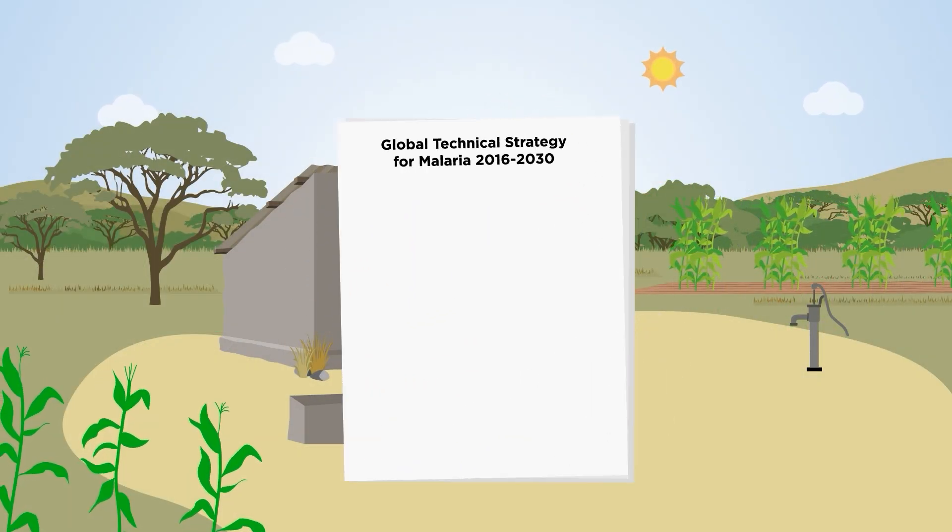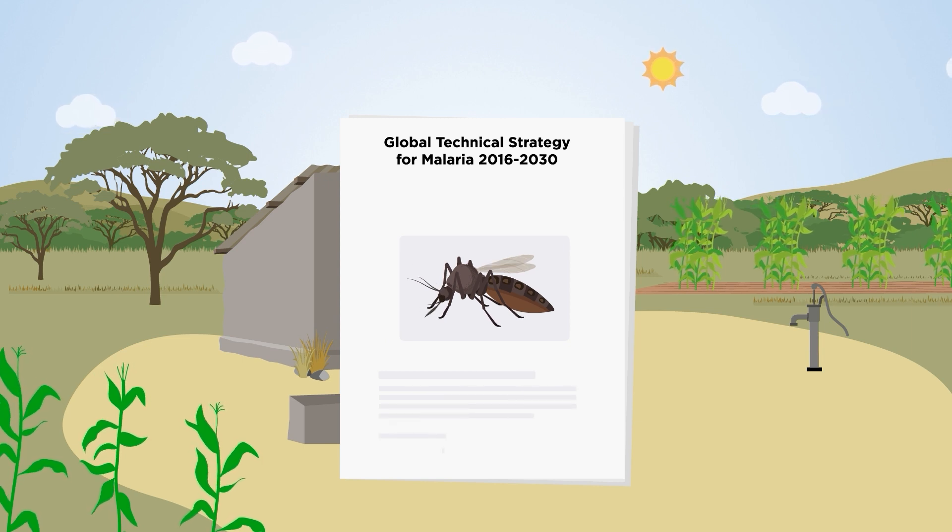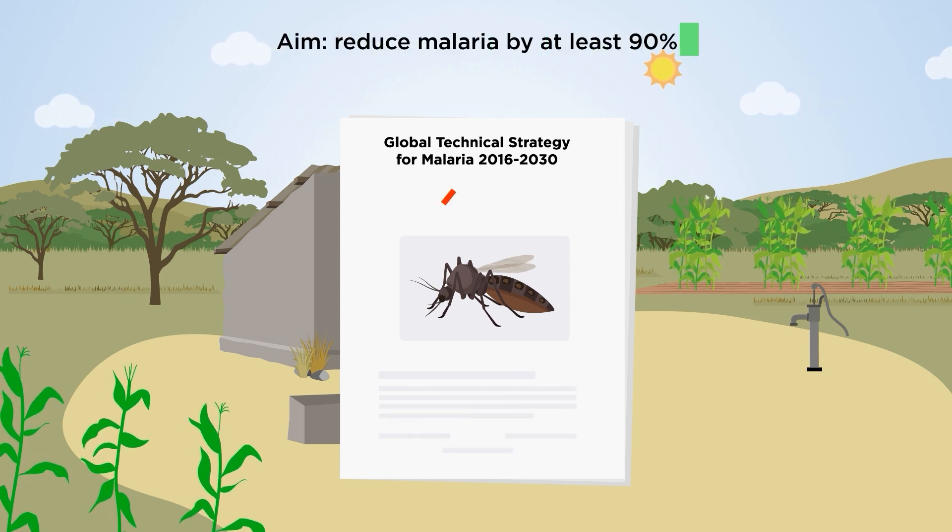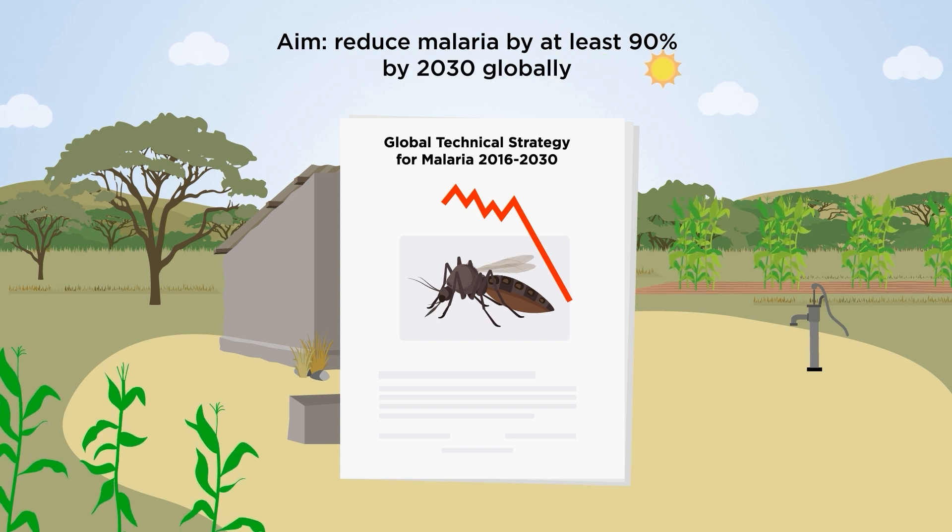The WHO technical strategy for malaria 2016 to 2030 has set ambitious targets to reduce malaria mortality and case incidences by at least 90% by 2030 globally.